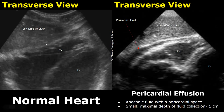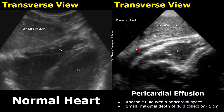The left lobe of the liver is used as a window to scan the heart. The right ventricle is seen first, and this is the left ventricle. The second image is of pericardial effusion — there is some anechoic fluid within the pericardial space. The maximal depth of the fluid collection can be measured to determine the severity; a small pericardial effusion is less than one centimeter in maximal depth.